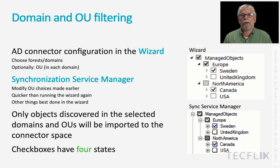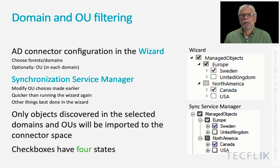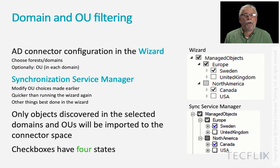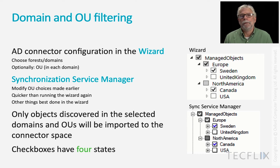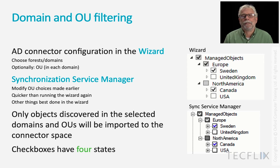So domain and OU filtering. The AD connector configuration is done initially in the wizard. You choose the forests and domains that you want, and for each of them you optionally choose OUs. You can just leave it as a default to include all OUs — that's what happens with the Express installation — but that's frankly a bit sloppy. We don't need to include everything that's in our AD, just because we need to include the users and groups of interest.